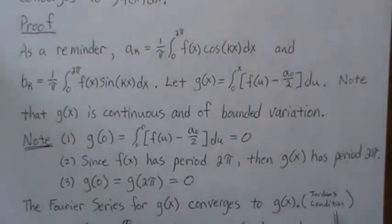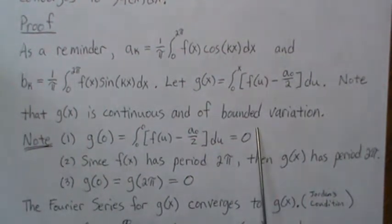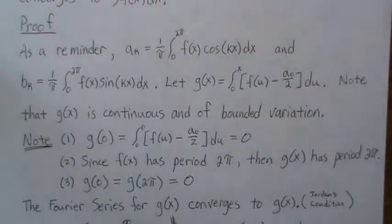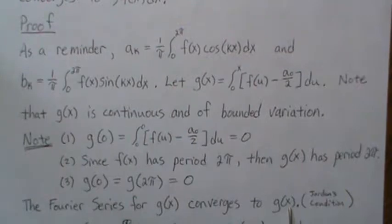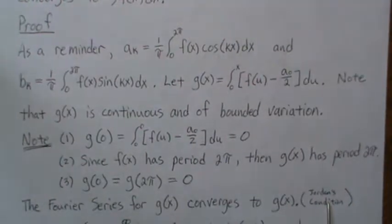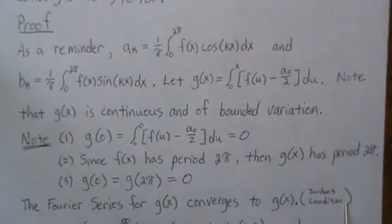And now by Jordan's condition, which we're going to prove in a later video, I want to say f13 or f14, that since it's continuous and of bounded variation, then the Fourier series for g(x) converges to g(x). And this is Jordan's condition, f13.